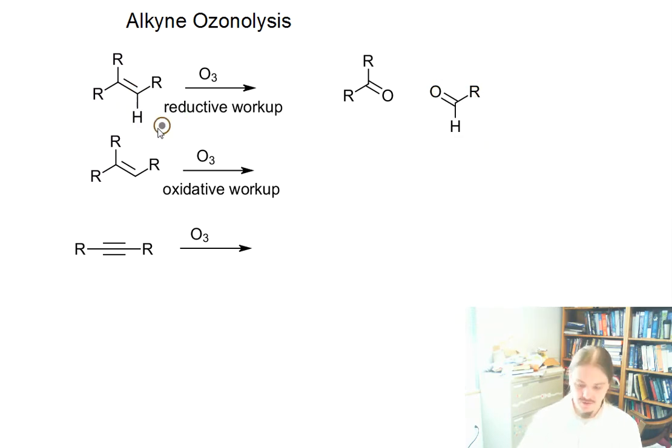The other option is oxidative workup, and this isn't done quite so commonly. Here, the carbon on the alkene that has the hydrogen becomes a carboxylic acid. The other carbon, where there are two hydrocarbon groups, is going to be a ketone no matter what. Ketones are hard to oxidize further.